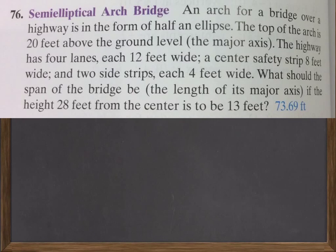Okay, let's consider this problem. We're given a semi-elliptical bridge over a highway. It says the top of the arch is 20 feet above ground level. That's above the major axis. And then it goes on to give us a whole bunch of information that is utterly and completely pointless. It has nothing to do with the problem.